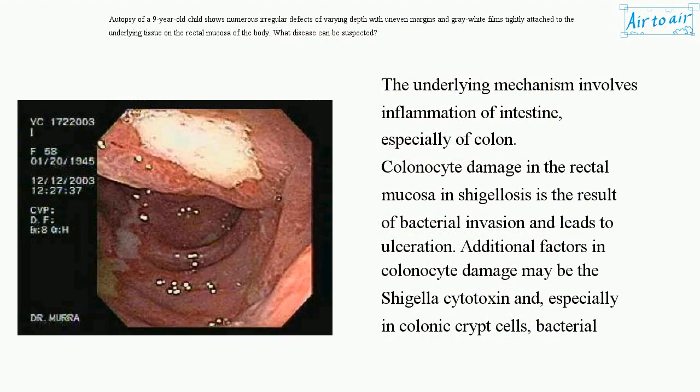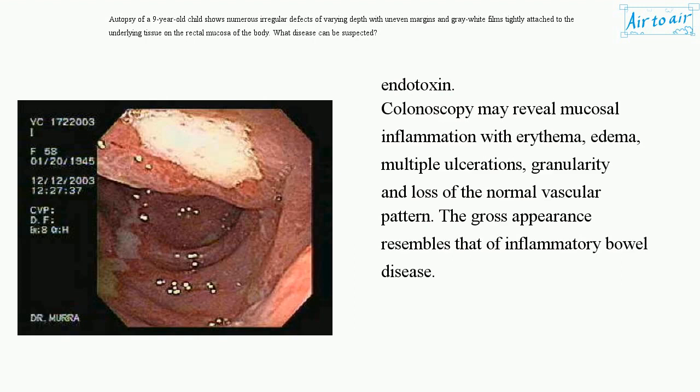The underlying mechanism involves inflammation of the intestine, especially of the colon, and colonocyte damage. In the rectal mucosa, shigellosis is the result of bacterial invasion and leads to ulceration. Additional factors in colonocyte damage may be the Shigella cytotoxin and, especially in colonic crypt cells, bacterial endotoxin. Colonoscopy may reveal mucosal inflammation with erythema, edema, multiple ulcerations, granularity, and loss of the normal vascular pattern.